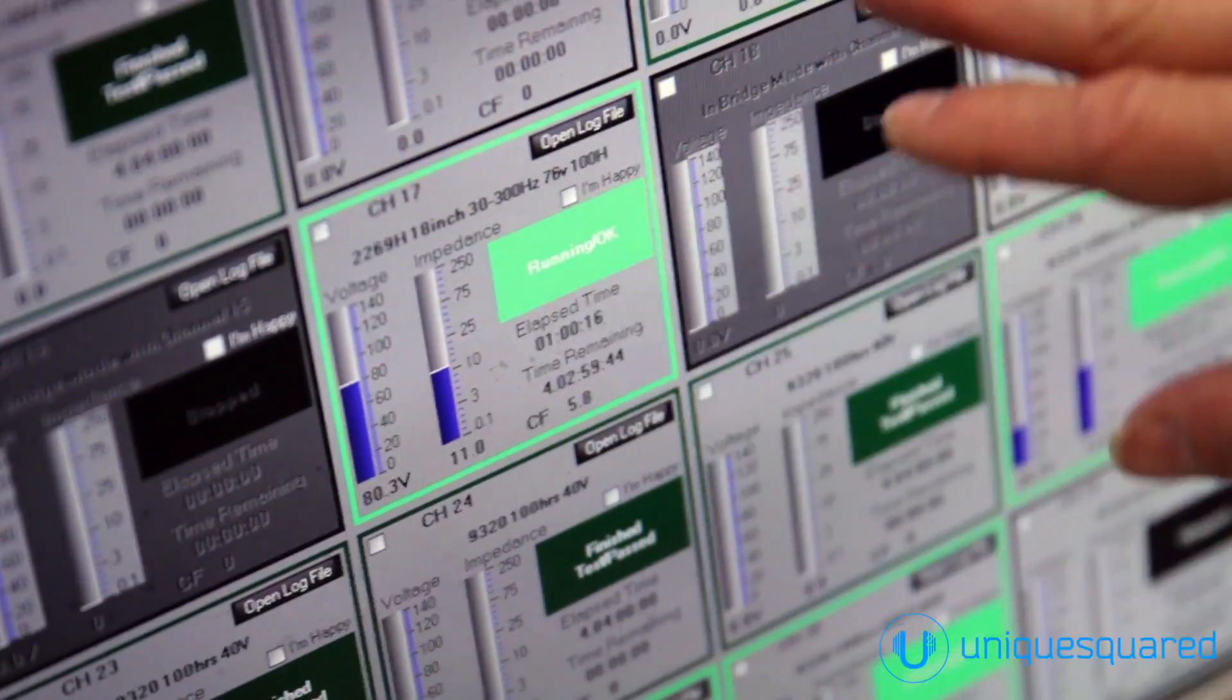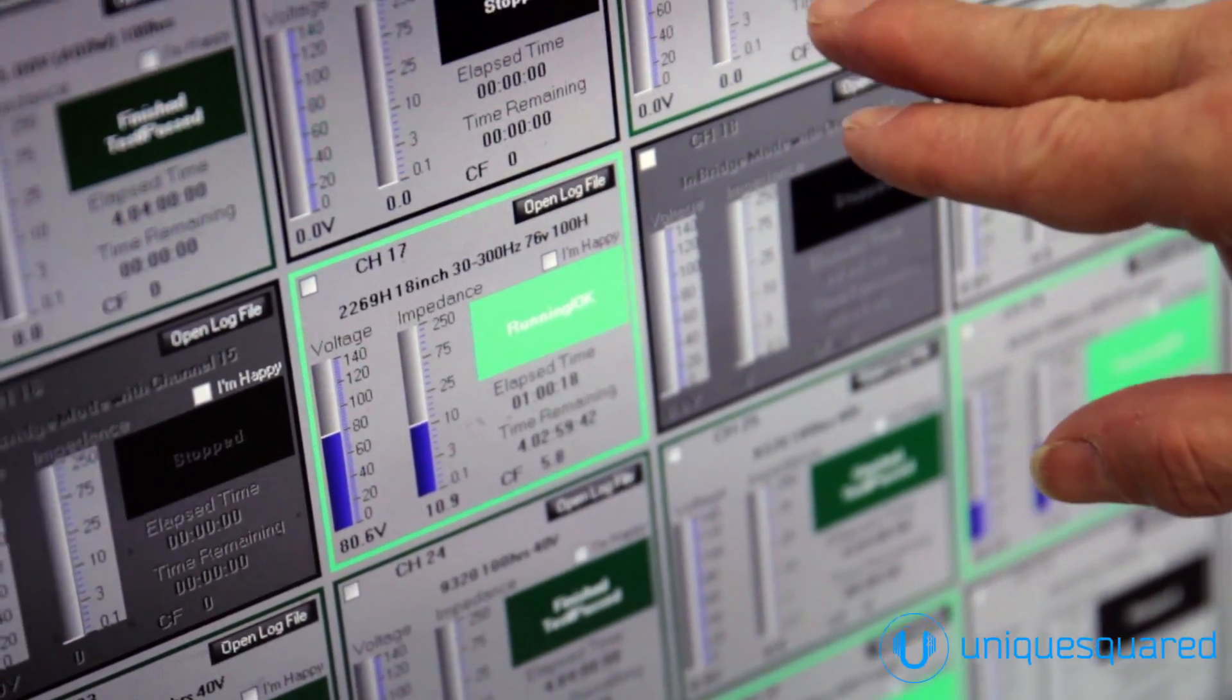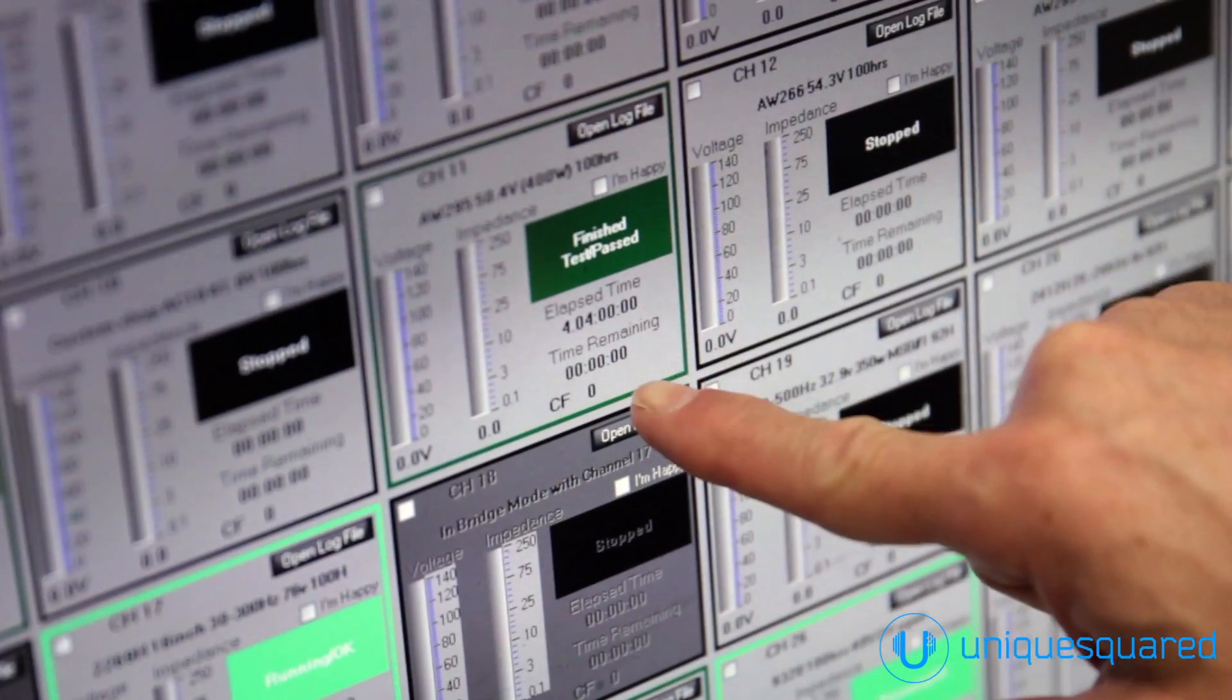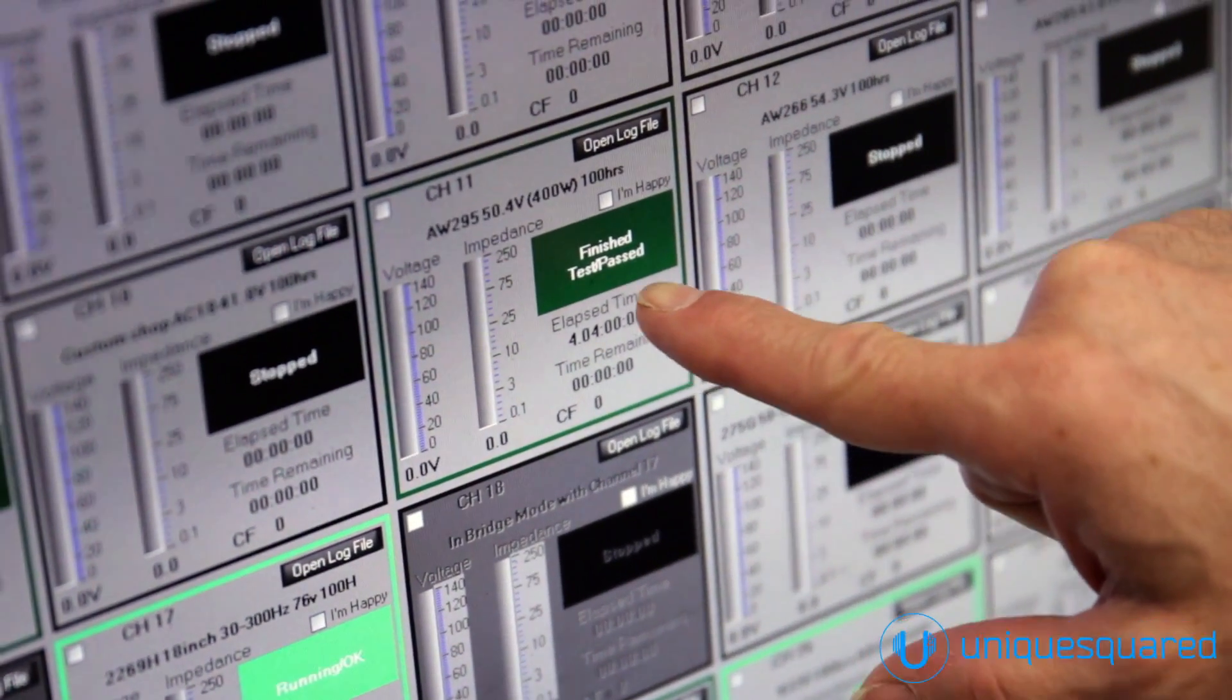What this display shows you is the health of each speaker, how long it's gone through the test, what the signal is that we're putting into it. This measures failure, or it lets you know when the failure occurred, and then of course they do a deep analysis, the engineers do a deep analysis of why it failed, and then their task is to fix that problem so that the speaker passes the 100-hour power test.